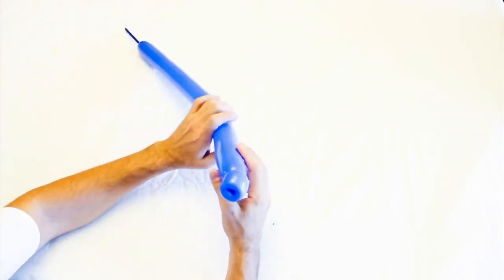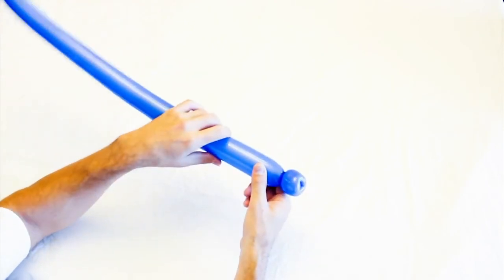And this is called an apple twist or tulip twist. We use it for pigs' noses and other types of things like that.